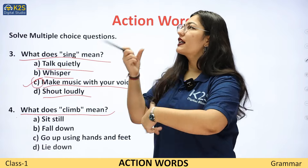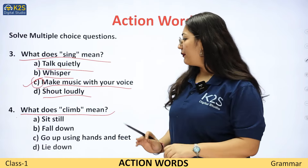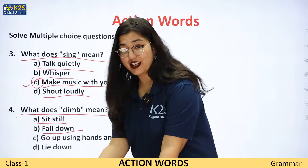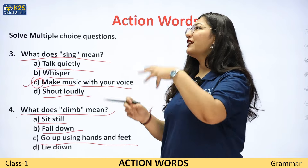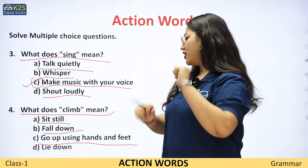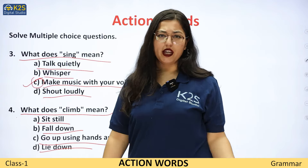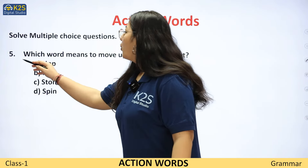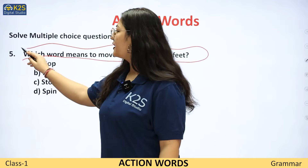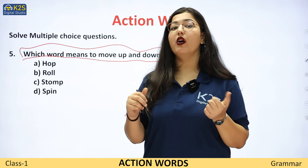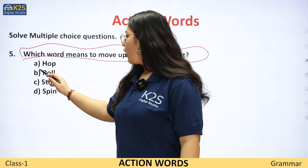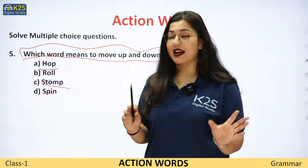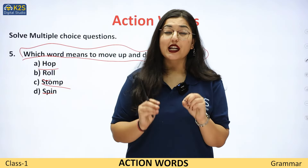'What does climb mean?' Climb — chadhna. Options: sit still — seedha baithna; fall down — gir jana; go up using hands and feet — upar haath aur pairon ka use kar ke upar chadhna; lie down — let jana. Ab aap mujhe answer batao. Last question: 'Which word means to move up and down on feet?' Pairon par up down move karne ko hum kya bolenge? Options: hop, row, stomp, spin. Aapko kya lagta hai iska answer kya hona chahiye? Try to figure out the answers.